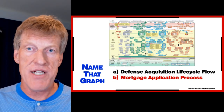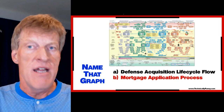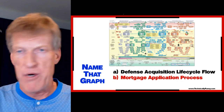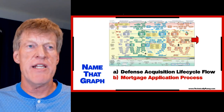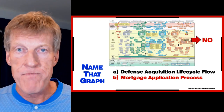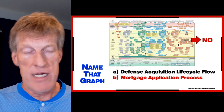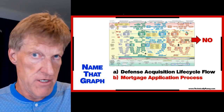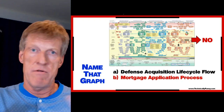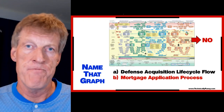It always comes out the same way — months and months, you put all these diagrams in and what do they say? No, no, no, no, no. You need the money? You can't have it. If you don't need the money, we'll lend it to you. But if you need the money — no, no, no.